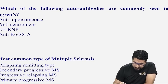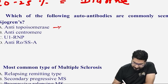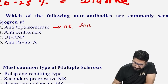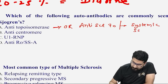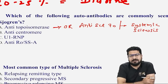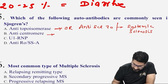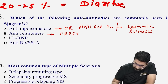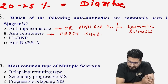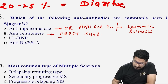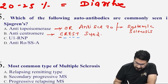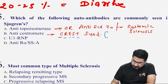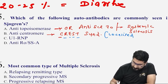Next question on Sjogren's syndrome antibodies. Anti-topoisomerase antibody, also called anti-SCL-70, is seen in systemic sclerosis — the systemic form of scleroderma. Anti-centromere antibody is seen in CREST syndrome: calcinosis, Raynaud's phenomenon, esophageal dysmotility, sclerodactyly, and telangiectasia. CREST syndrome is the localized form of scleroderma.